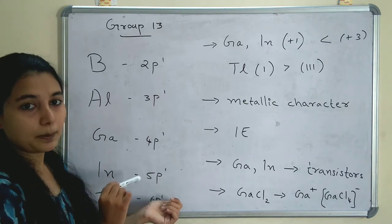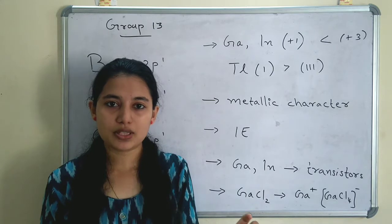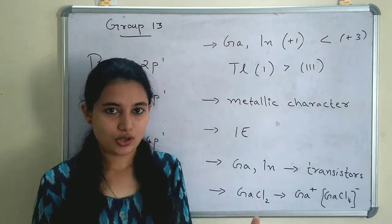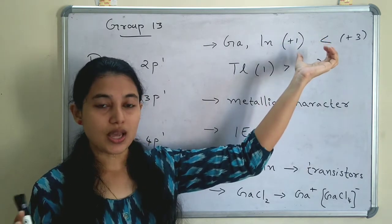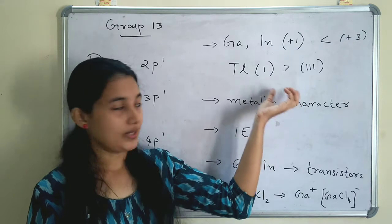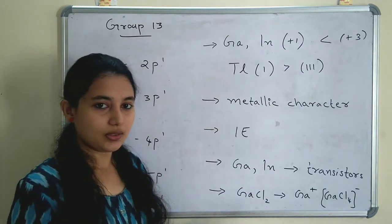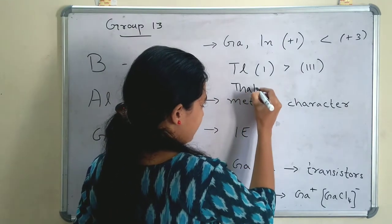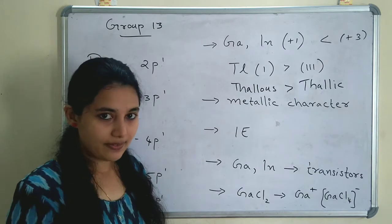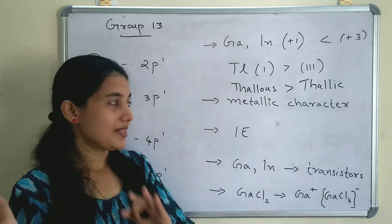When we discuss group 1 elements and group 2 elements, group 1 elements form monovalent compounds and group 2 elements form divalent compounds. So coming to group 13 elements, the tendency will be trivalent compounds. Gallium and indium in plus 1 oxidation state are less stable than plus 3 oxidation state. But there is an exceptional case — thallium's monovalent compound is more stable than its trivalent compound. So thallium(I) compounds are more stable than thallium(III) compounds.